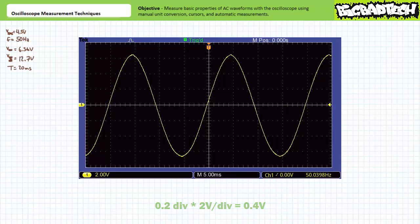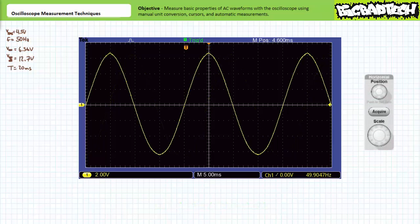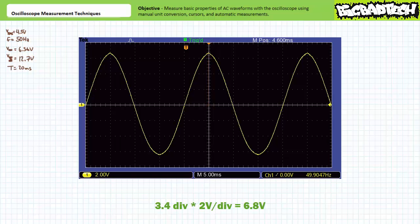We can horizontally reposition the waveform using the horizontal position knob until our peak value aligns with a convenient vertical axis. Note the waveform peaks approximately 3.4 divisions above the horizontal axis. Given the current vertical sensitivity of 2 volts per division, this corresponds to a value of 3.4 divisions times 2 volts per division, or approximately positive 6.8 volts. Slightly higher than we anticipated.